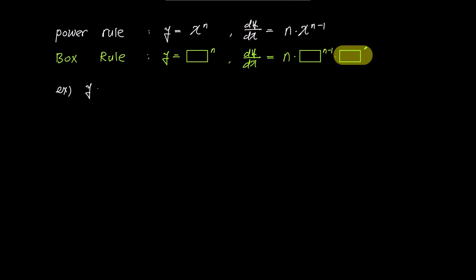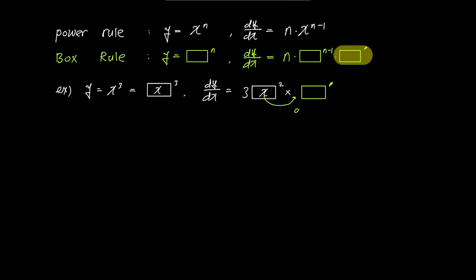You might find the concept of box prime a bit unfamiliar, but you can think of it as a term derived from the box just before it, and it's always a term multiplied in the final step of differentiation. For example, if y is x to the power of 3, comparing it with the box rule, we can see that x is inside the box, and when we differentiate it with respect to x, following the formula, it becomes 3 times x squared times box prime. For the box prime, simply insert the derivative of x, which is dx over dx equal to 1. Thus, the answer is 3x squared.